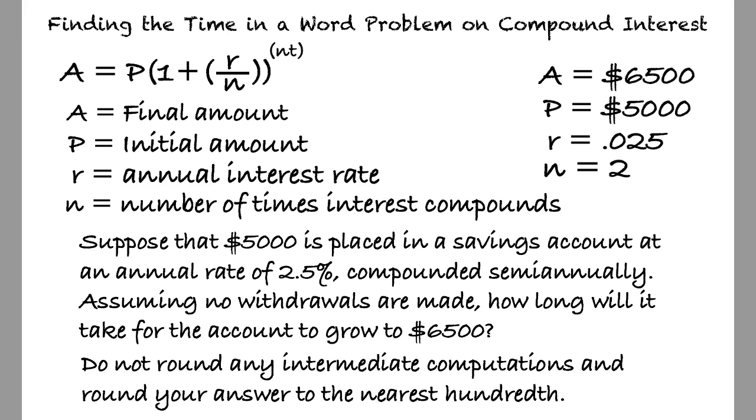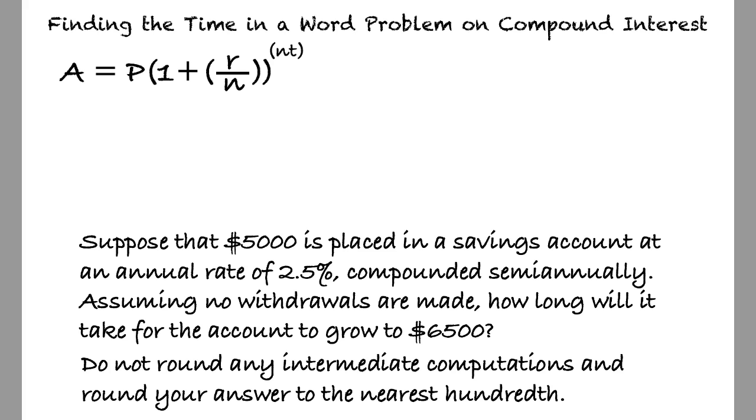And since time is the only variable in the equation that is not given in the example problem, let's substitute the values into the equation, leaving t as the variable. This yields 6,500 equals 5,000 multiplied by 1 plus 0.025 divided by 2, all raised to the 2t power.